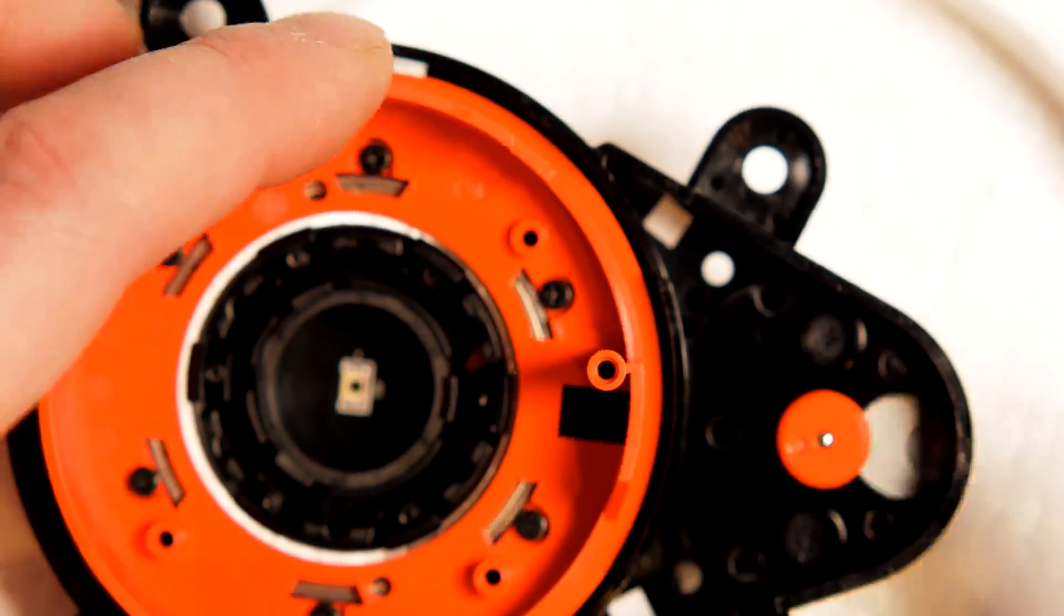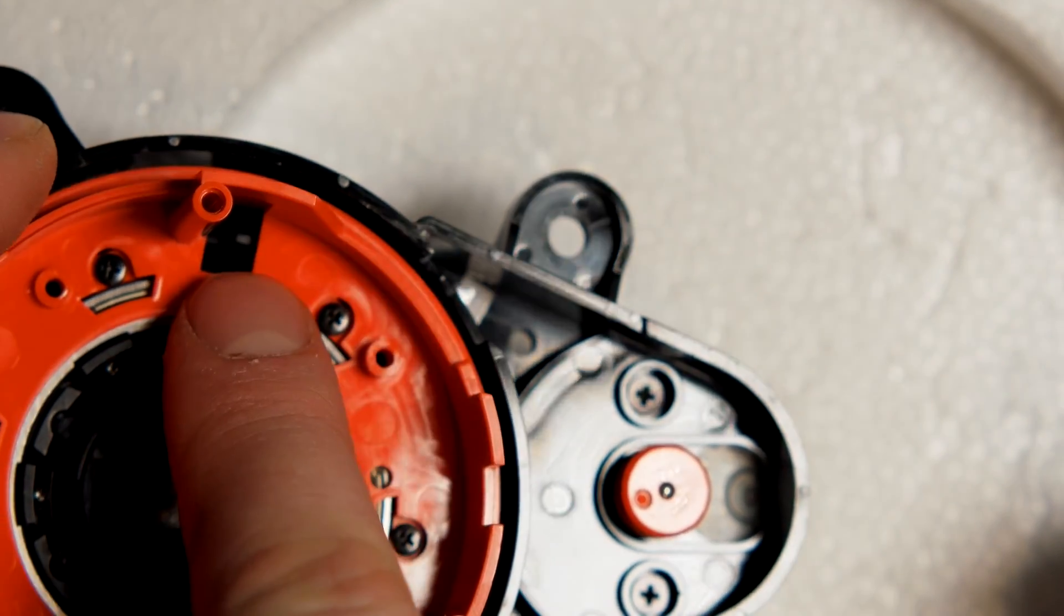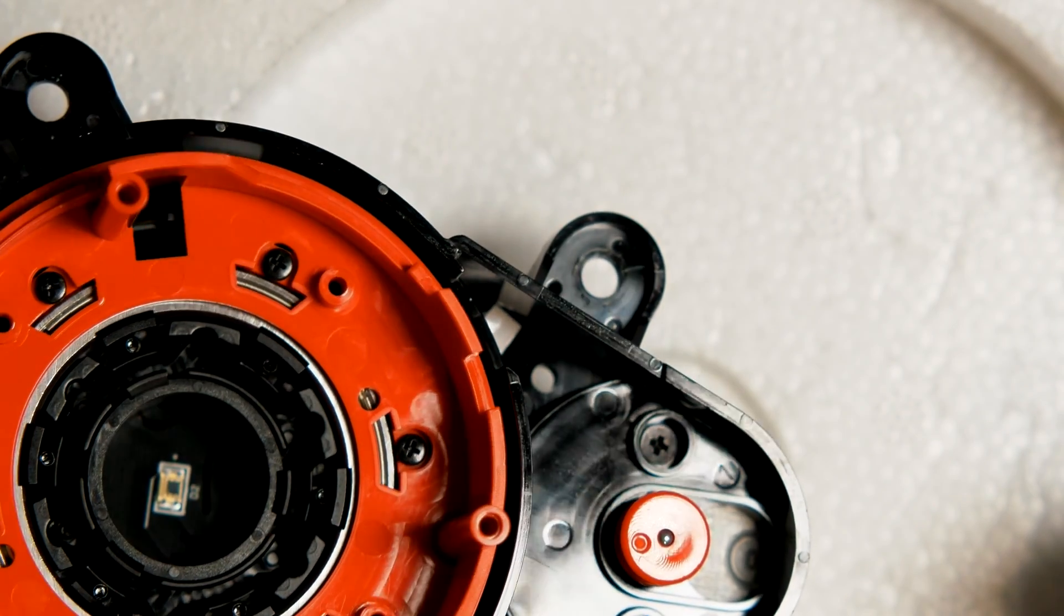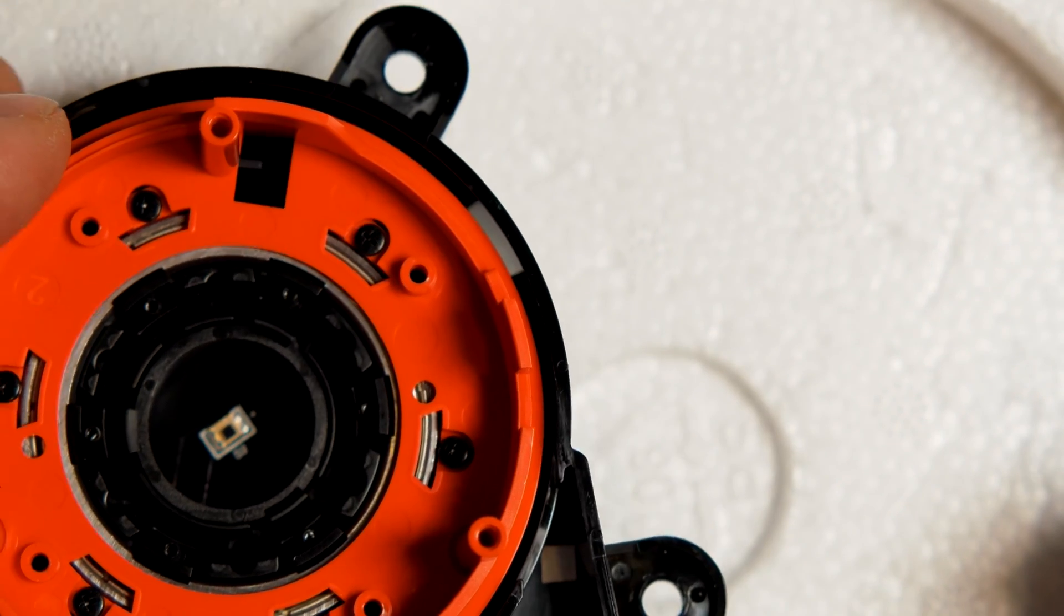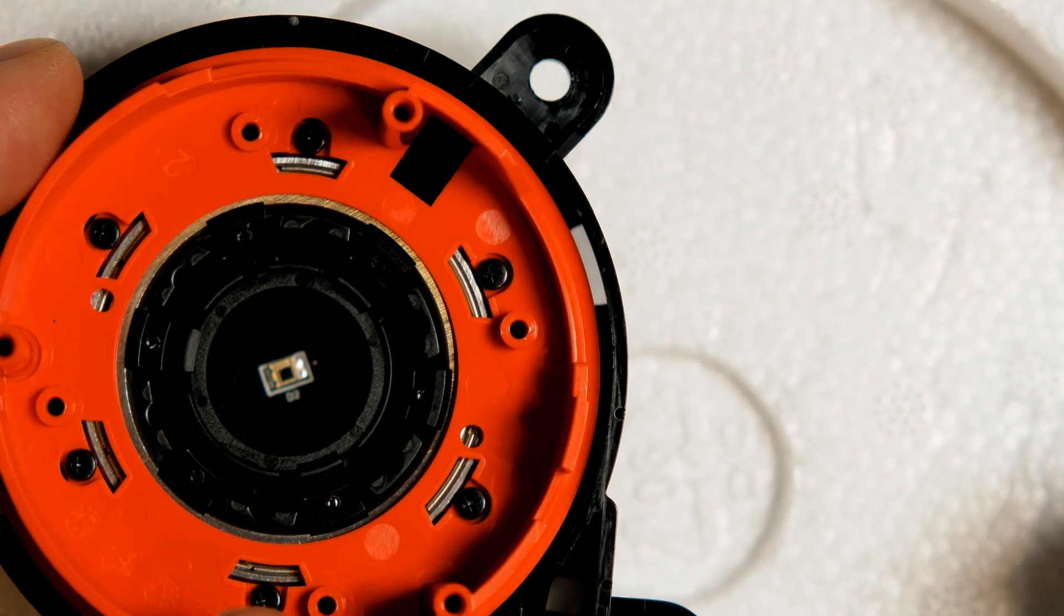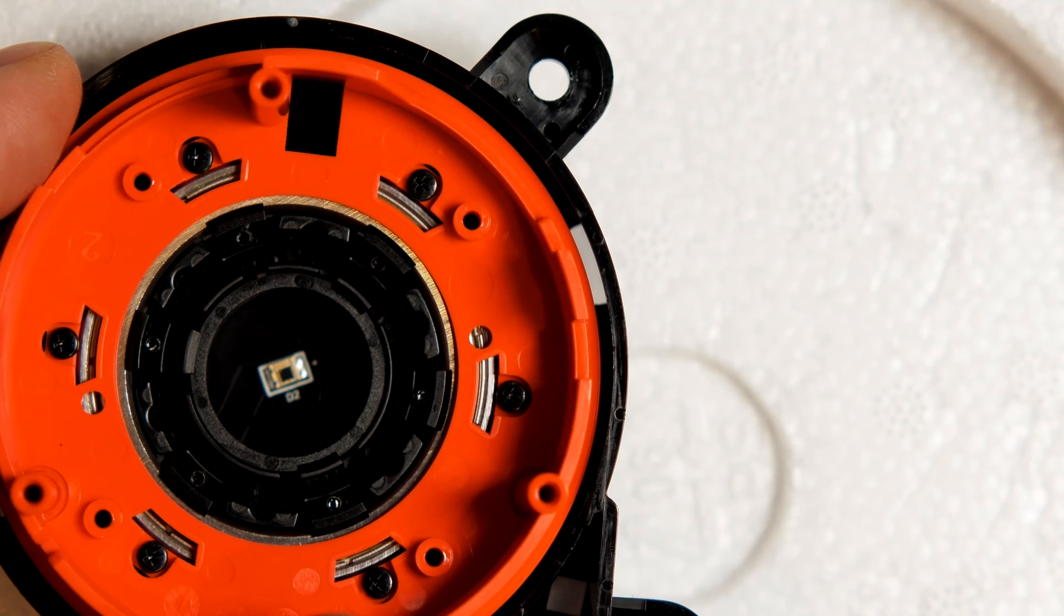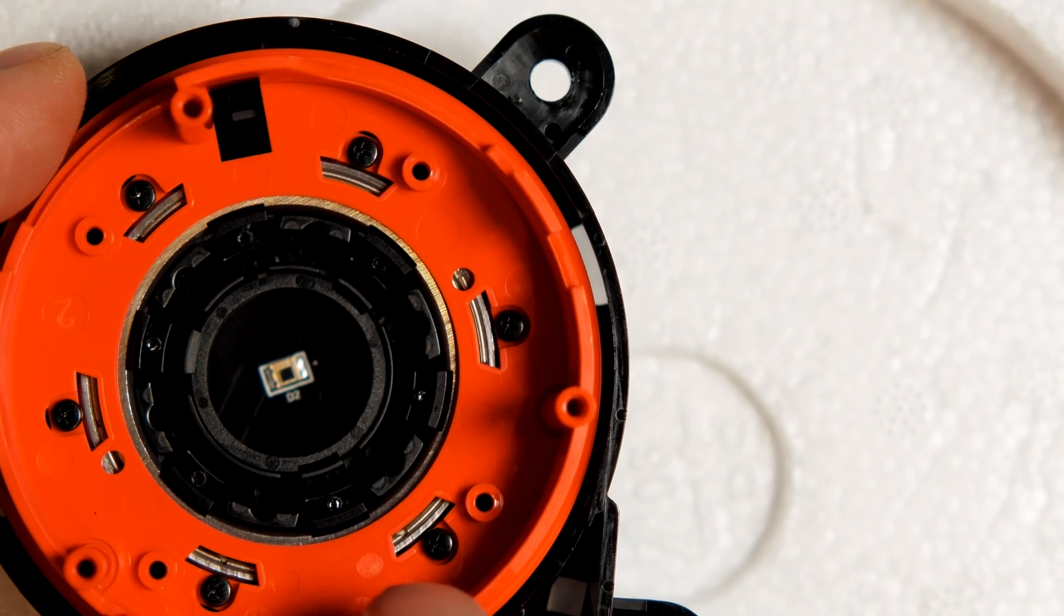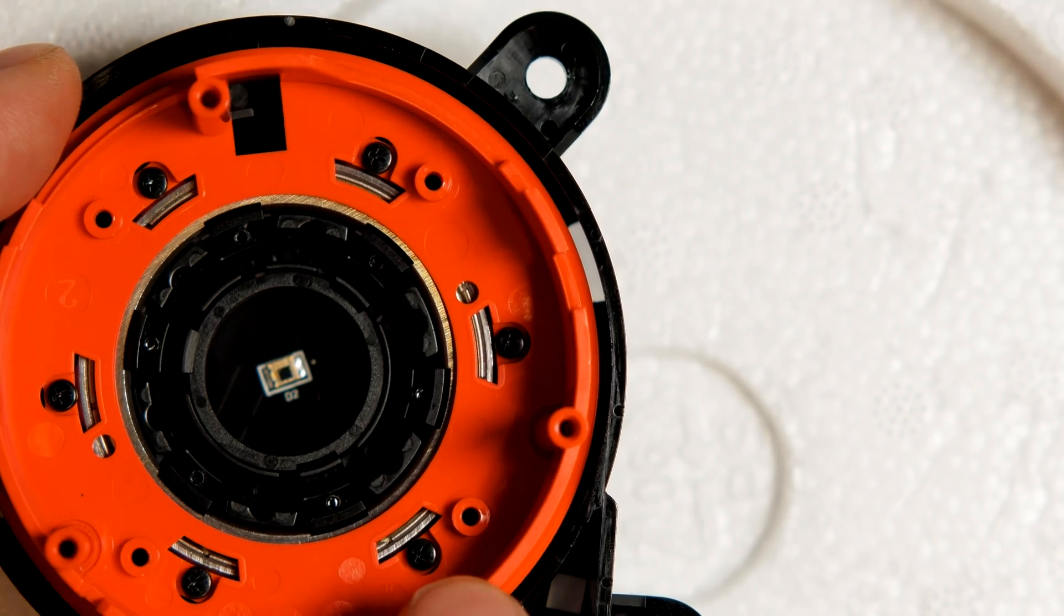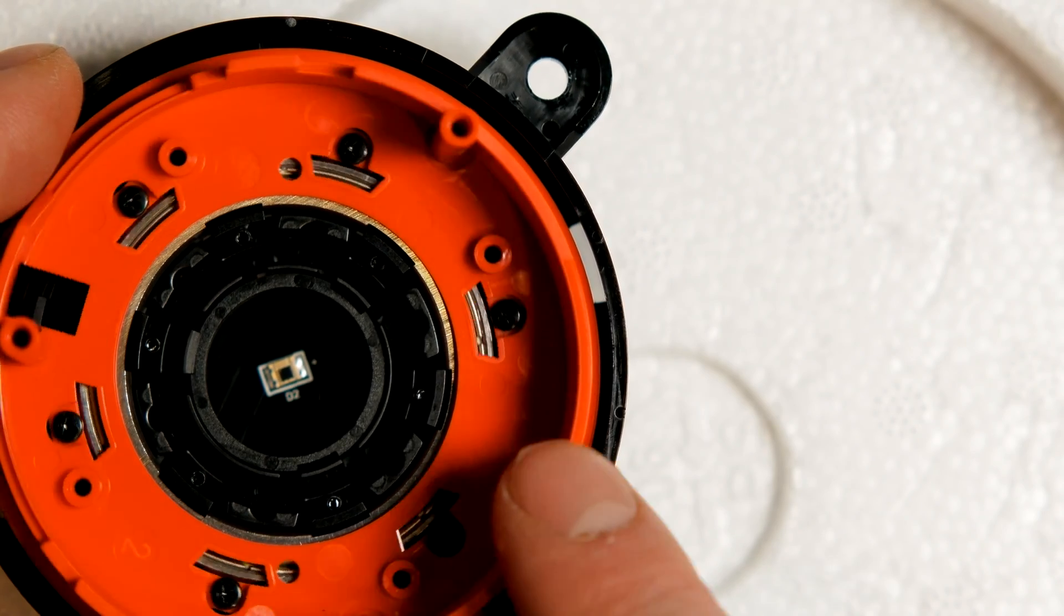You also have speed encoding using gaps. This gap pattern is used to measure the rotating speed of the sensor. And there's a small gap here which indicates the start of a new turn.